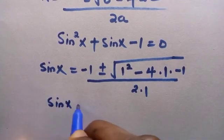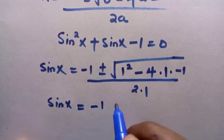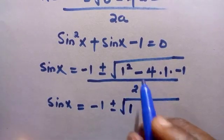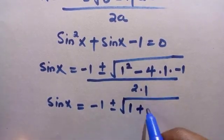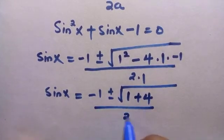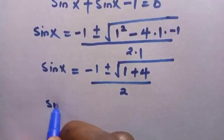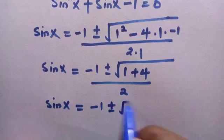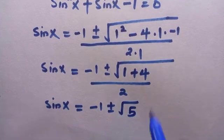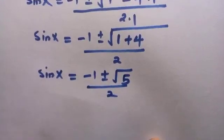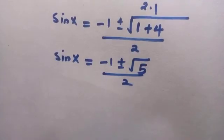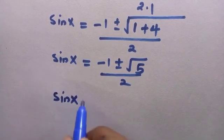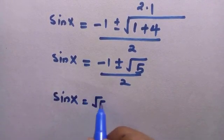Simplifying, we have sin X equals negative 1 plus or minus the square root of 1 plus 4, which is the square root of 5, divided by 2. Separating the plus and minus cases: sin X equals root 5 minus 1, divided by 2, or sin X equals negative root 5 minus 1, divided by 2.